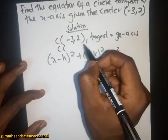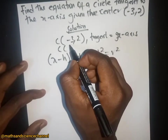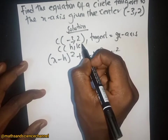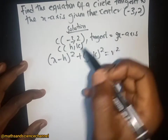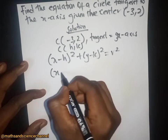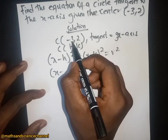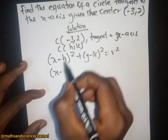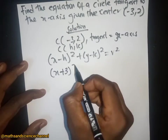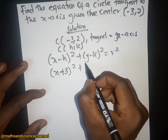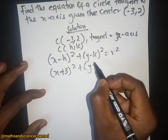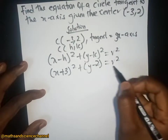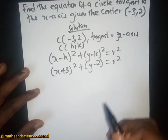So h and k respectively will be equal to negative three and two. We have x minus h, which is negative three, so it becomes (x plus 3) squared, plus (y minus 2) squared, equal to r squared. Now we need to find the radius.